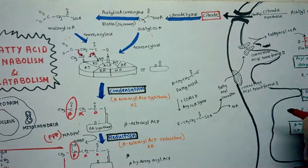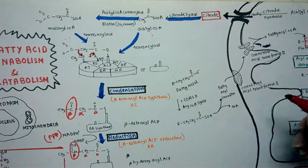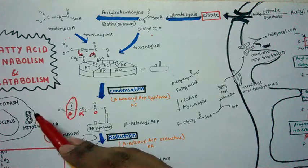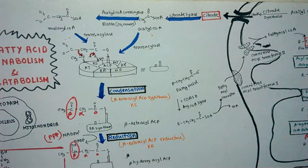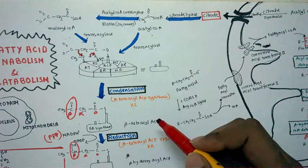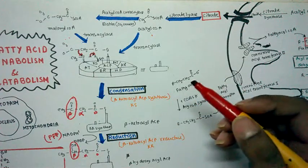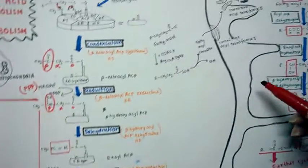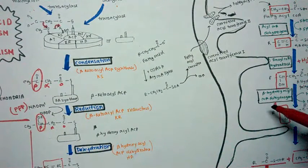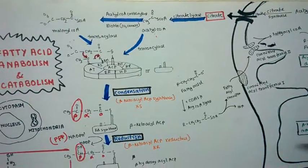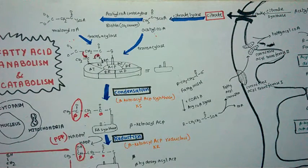This was an overview of both fatty acid anabolism and catabolism. The key distinction is that fatty acid anabolism takes place in the cytoplasm, whereas fatty acid catabolism takes place in the mitochondria. The basic reaction schemes are opposite to each other: anabolism follows reduction → dehydration → reduction, while catabolism follows oxidation → hydration → oxidation.